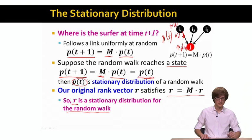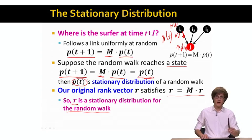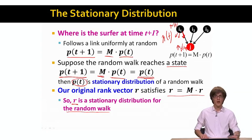So this means that our rank vector r is a stationary distribution for this random walk process. Think about this: PageRank scores correspond to the probability that this random surfer, who infinitely long walks the web graph, resides at a given node at some given time t. This is called the random walk interpretation of PageRank.